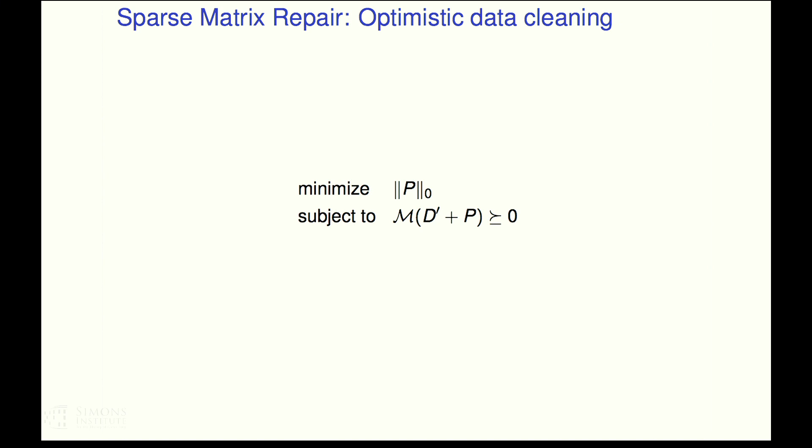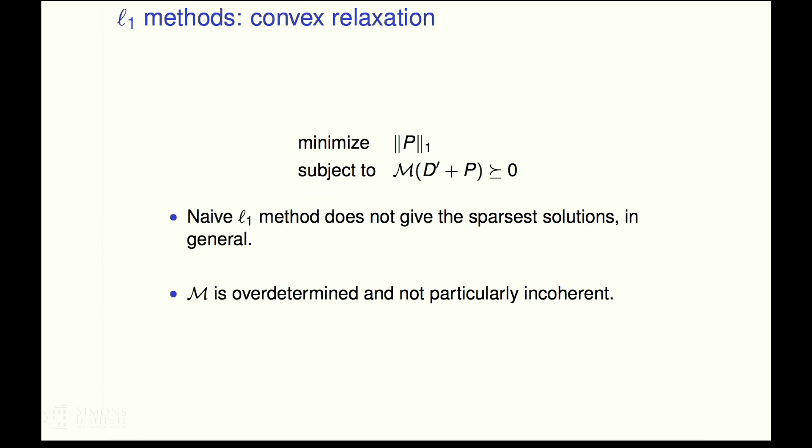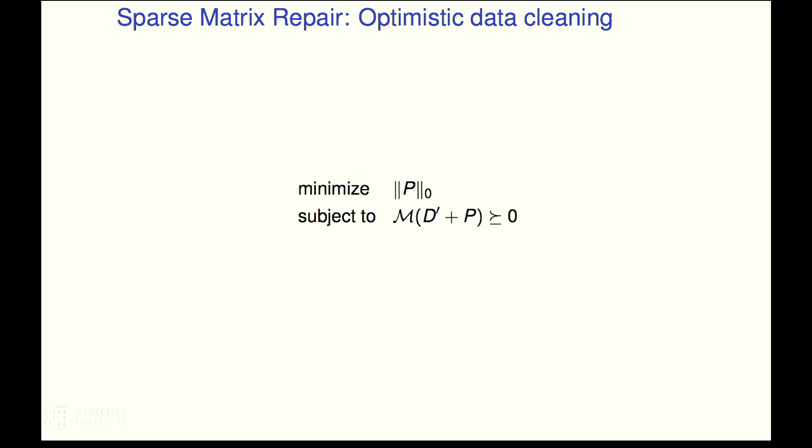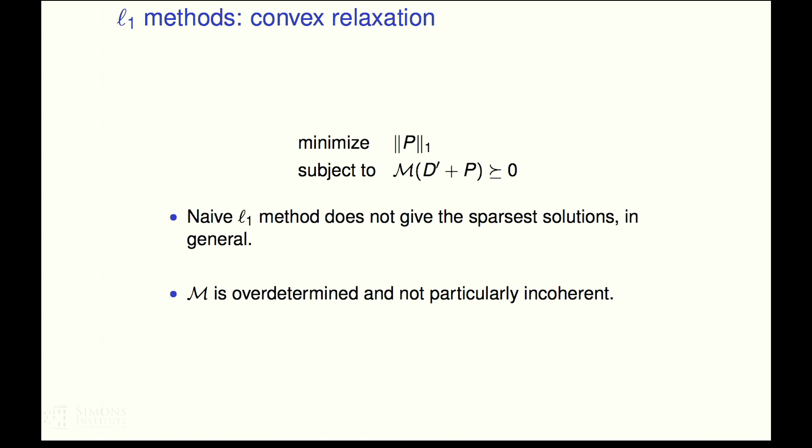This is sparse matrix repair, sparse metric repair, make as few changes as possible to ensure that your new data satisfies a metric. If one is not looking too carefully at this slide and zooms in on this L0 norm, man, that's not a norm, it's not convex. I can't deal with this problem. Maybe I could convexify this norm and make this an L1 norm. That's a pretty nice standard thing to do. Except I'm going to tell you empirically, it doesn't work as well as one would think. So the naive convex relaxation does not give you the sparsest solutions in general.